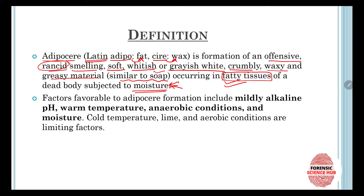Adipocere forms when fatty tissues are subjected to moisture. The factors favorable to adipocere formation include mildly alkaline pH, warm temperature, anaerobic conditions, and moisture. Cold temperature, lime, and aerobic conditions are limiting factors — they slow down or stop the formation of adipocere.